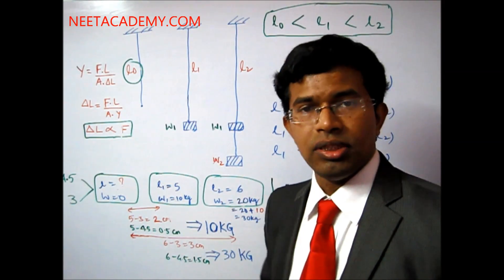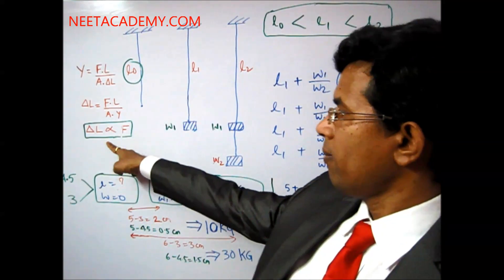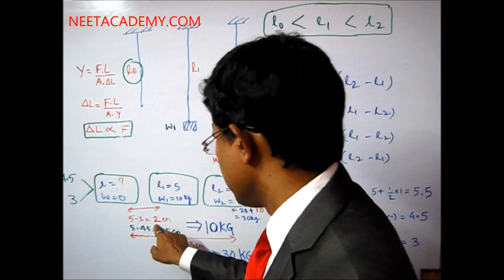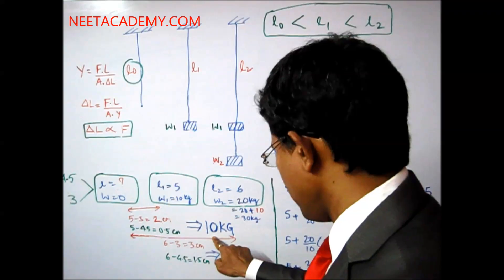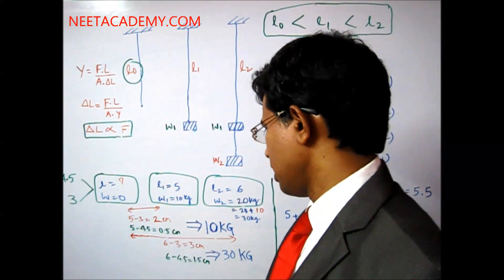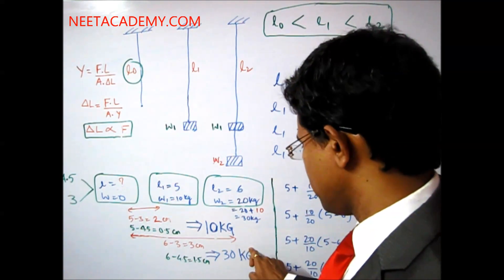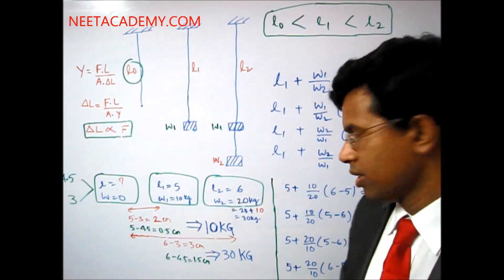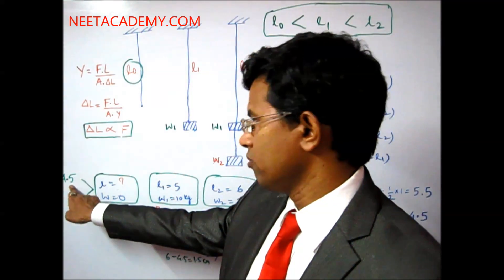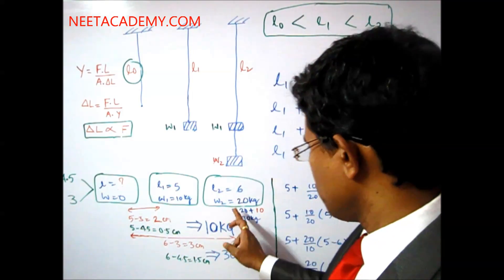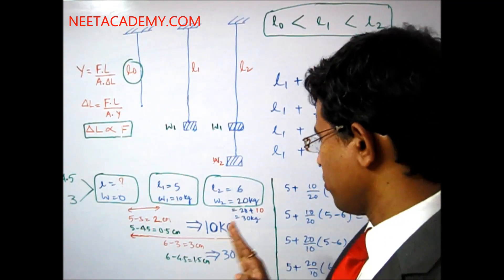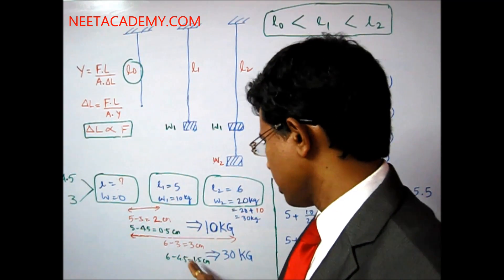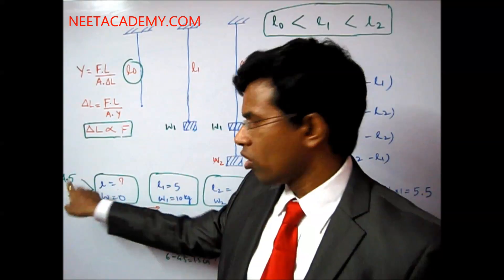The stretch should be proportional to the weight. Weight increased 3 times (10 kg to 30 kg), but stretch only went from 2 cm to 3 cm — not 3 times. So l0 = 3 is incorrect. Now test l0 = 4.5: stretch for 10 kg = 5 − 4.5 = 0.5 cm; stretch for 30 kg = 6 − 4.5 = 1.5 cm. Weight increases 3 times, stretch increases 3 times — perfectly proportional. So 4.5 is the correct answer.